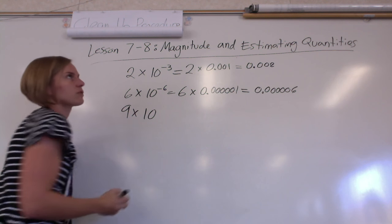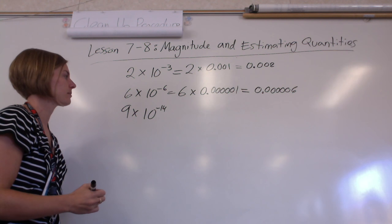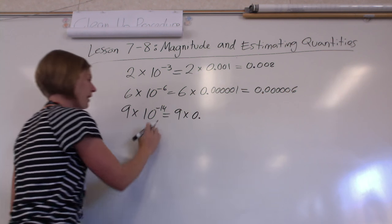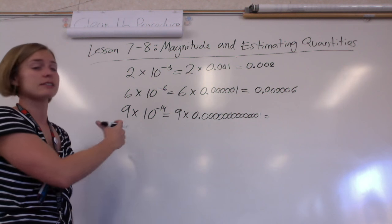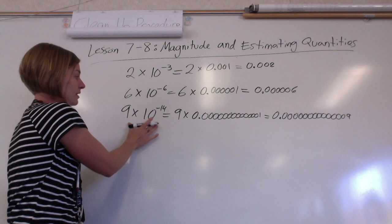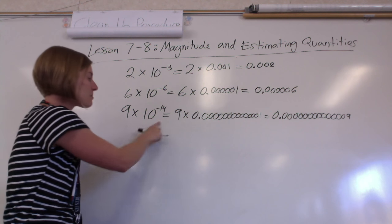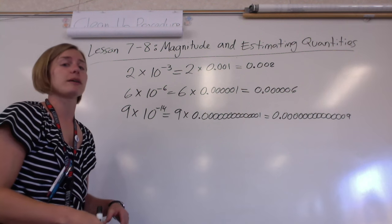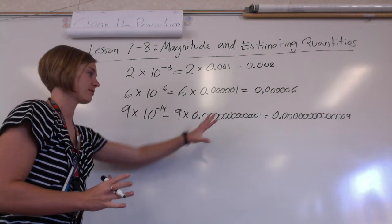Let's do one more extreme example: 9 times 10 to the negative 14. So that's 9 times then we have thirteen zeros. Let's actually multiply it out — replacing the one with the nine, so we still have our thirteen zeros. Scientific notation, or just this method of using the magnitude times a number, is a much more efficient way of writing really really small numbers. And honestly that number is not that small when you think about sizes of things in cells and atoms.